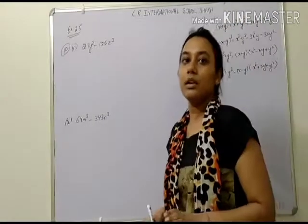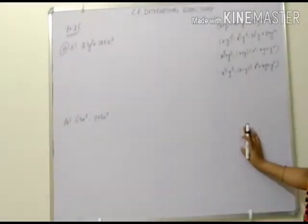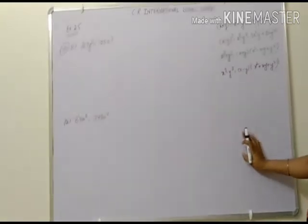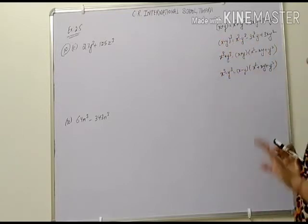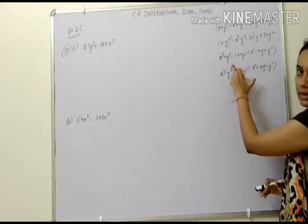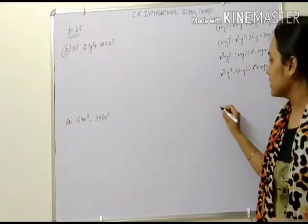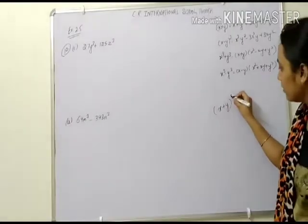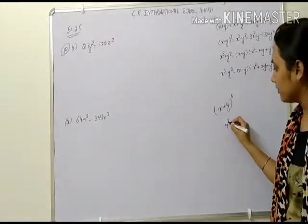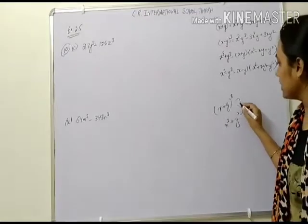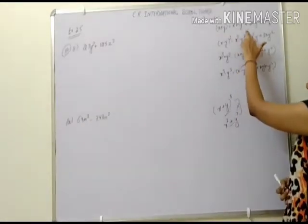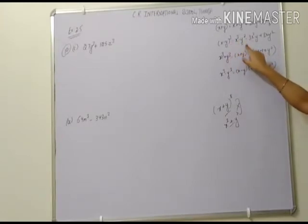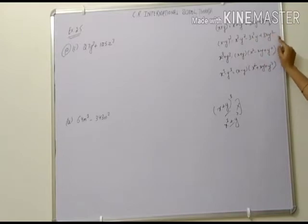Now moving to the next question. Here we have two terms and their cube. These two formulae are different — x plus y whole cube equals x cubed plus y cubed plus 3x squared y plus 3xy squared. And x minus y whole cube equals x cubed minus y cubed minus 3x squared y plus 3xy squared. You have to memorize all these formulae.